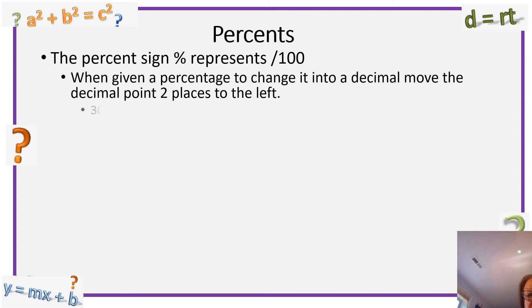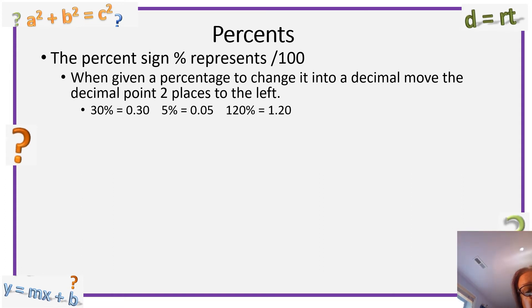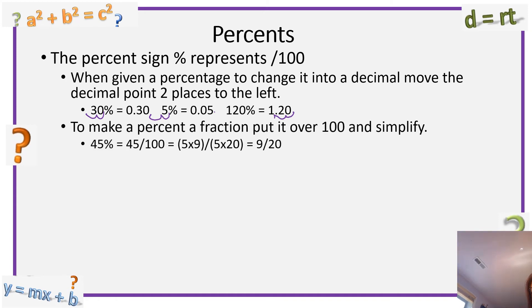Now let's talk about percents. The percent sign represents divide by 100. When given a percentage, to change it into a decimal, move the decimal point two places to the left: 30% becomes 0.30, 5% becomes 0.05, and 120% becomes 1.20. To make a percent a fraction, put it over 100 and simplify. So 45% becomes 45 over 100. Since 45 is 5 times 9 and 100 is 5 times 20, we cross off the fives and get 9 over 20.